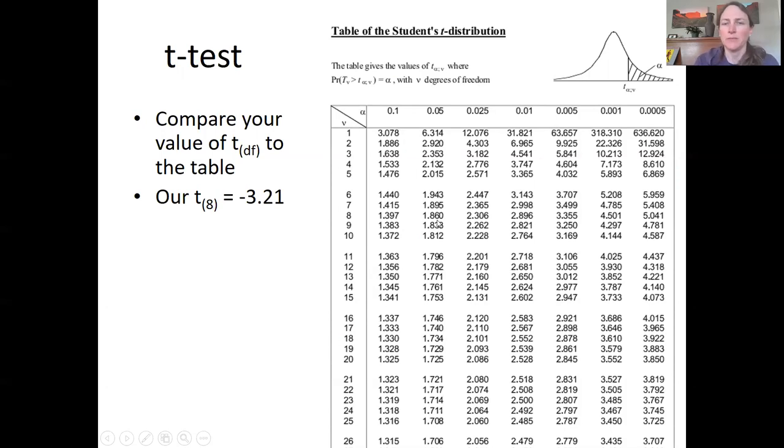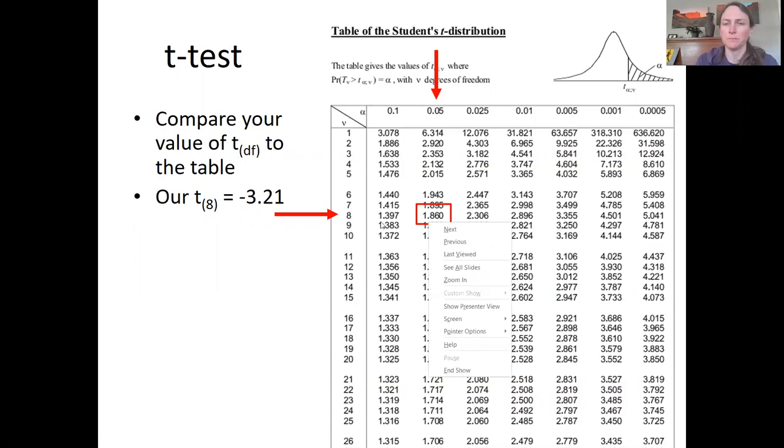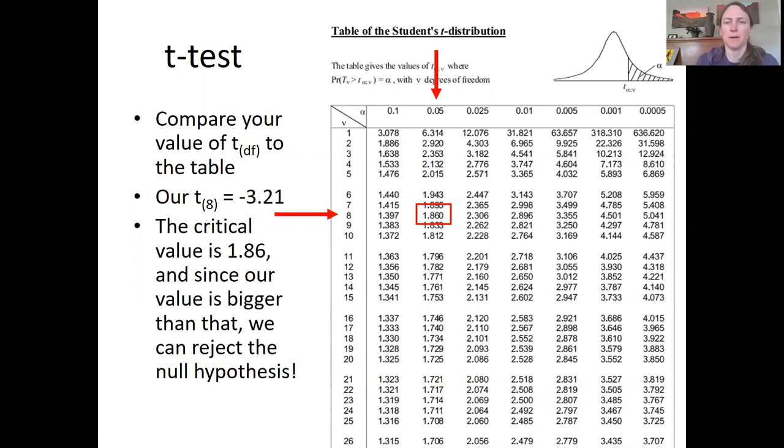So these are all in the positive, but basically we're looking for values larger than 3.21. And what we can see is that at an alpha of 0.05, our critical t value would be 1.86. So right here, so you go degrees of freedom eight, and an alpha 0.05. As long as our t value is greater than 1.86, then we can reject the null hypothesis.